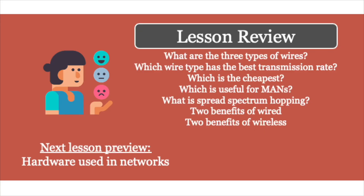That ends the lesson for today. Next lesson we're going to be looking at the hardware used in networks. By the end of this lesson you should be able to identify the three types of wires used to build networks, answer questions about which wire type has the best transmission rate, which is the cheapest, which is useful for metropolitan area networks, and which is useful for LANs. You should also be able to answer questions about Bluetooth and Wi-Fi, explain spread spectrum hopping, and give at least two benefits and two disadvantages of both wired and wireless.